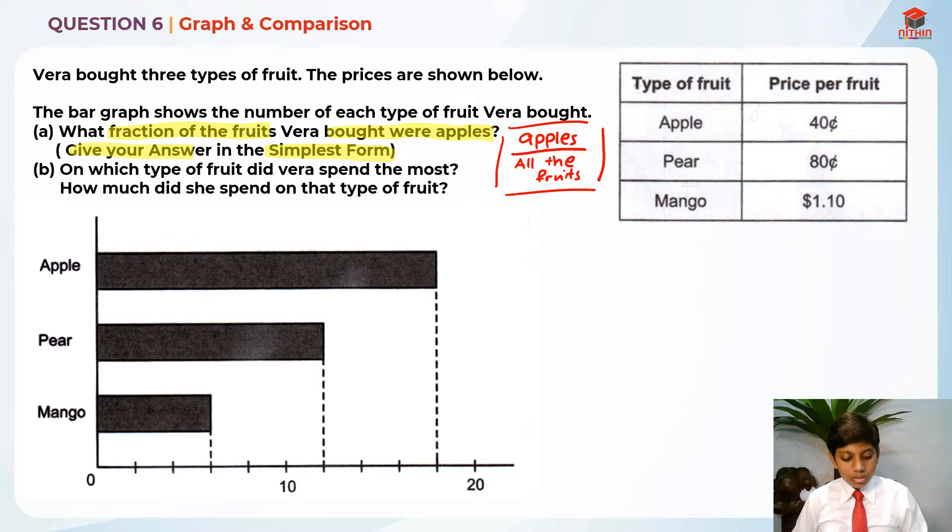Now we need to know another thing. Let's analyze the table first. Apple per fruit is 40 cents. That means one fruit, 40 cents. Pear, one pear costs 80 cents. And mango, one mango costs $1.10.